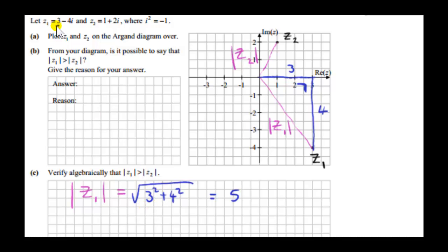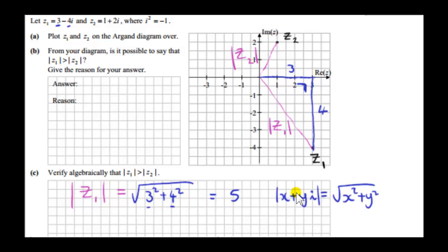What we just did was square the real part of Z1, which is 3 squared, and square the imaginary part. If we square minus 4, that's just the same as plus 4 squared, which is 16. So in general, the modulus of any complex number x plus yi is found by squaring the real and imaginary parts, summing them, and taking the square root.